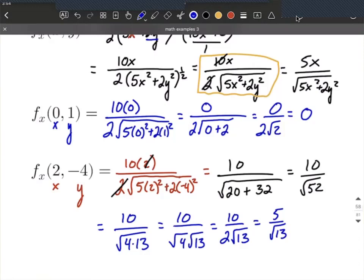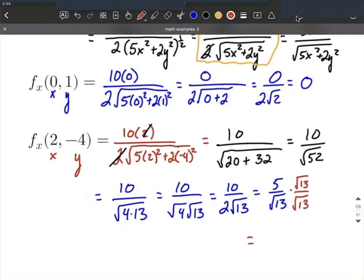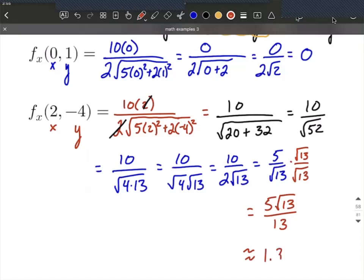We still have a radical in the denominator, so we rationalize by multiplying numerator and denominator both by √13. That gives us 5√13 over 13—a fantastic exact answer. We could put it in our calculators to get an approximation of approximately 1.38675. I hope this helps as you're working on finding partial derivatives and evaluating them at given values. Good luck!